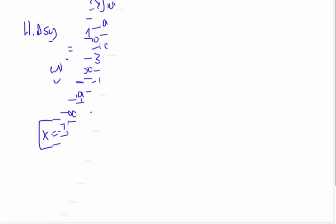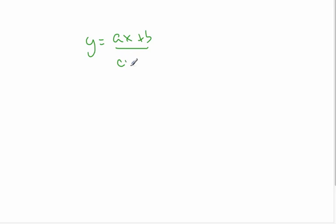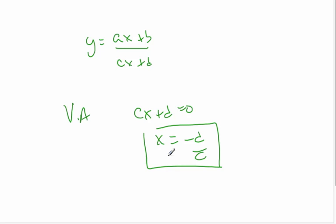Whereas here there's no domination—it's going to be the leading coefficients. If I have the scenario y equals ax plus b over cx plus d, the vertical asymptote is going to be where cx plus d equals zero, so cx will be minus d, x equals minus d over c. This is the vertical. Horizontal asymptote: the horizontal asymptote will be a over c because these are the same.